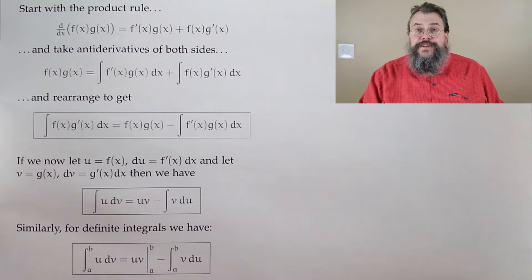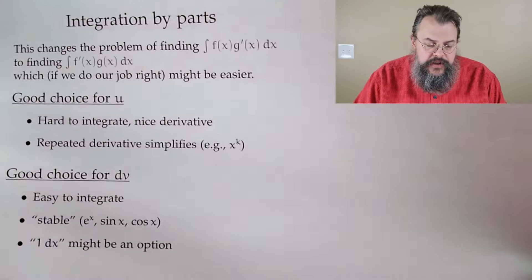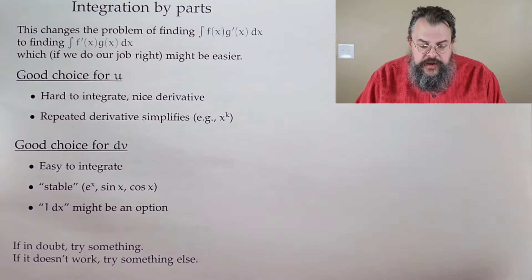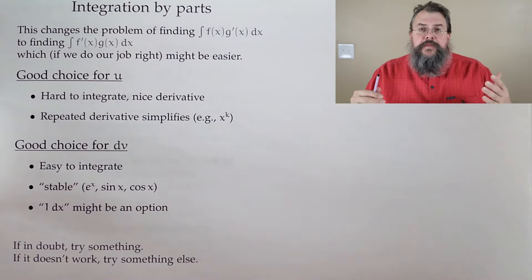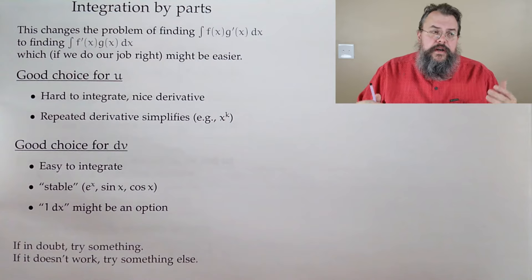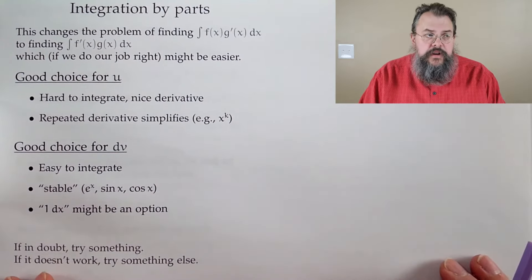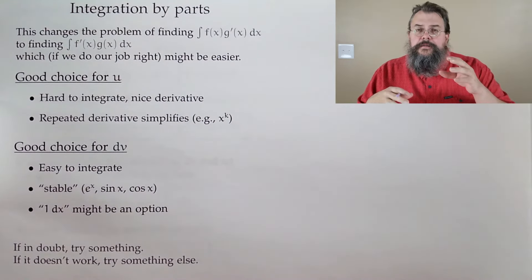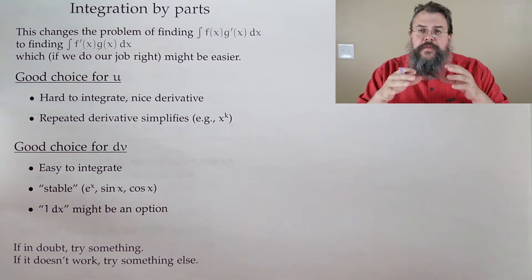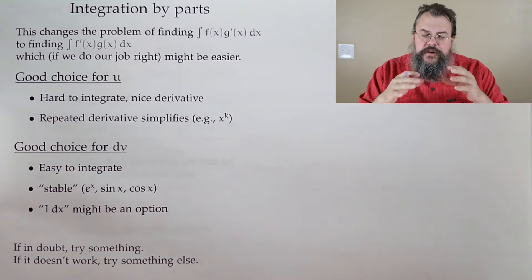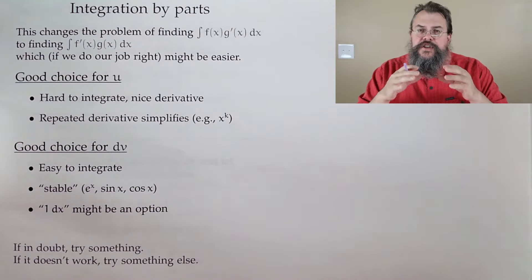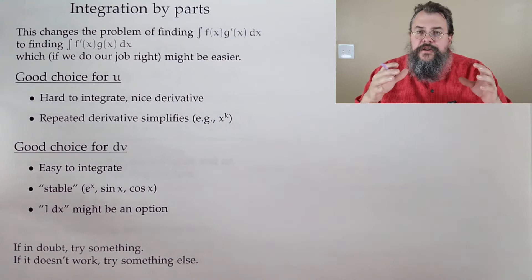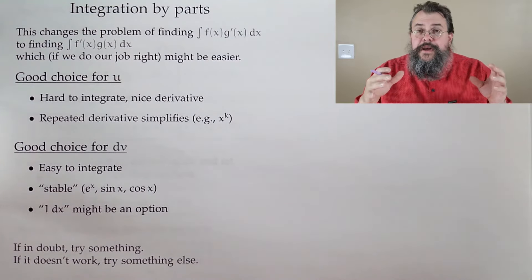This is called integration by parts. Why? Because there are two pieces — f and g′ — and we're changing the integral of fg′ to the integral of f′g, with the goal of making things simpler.